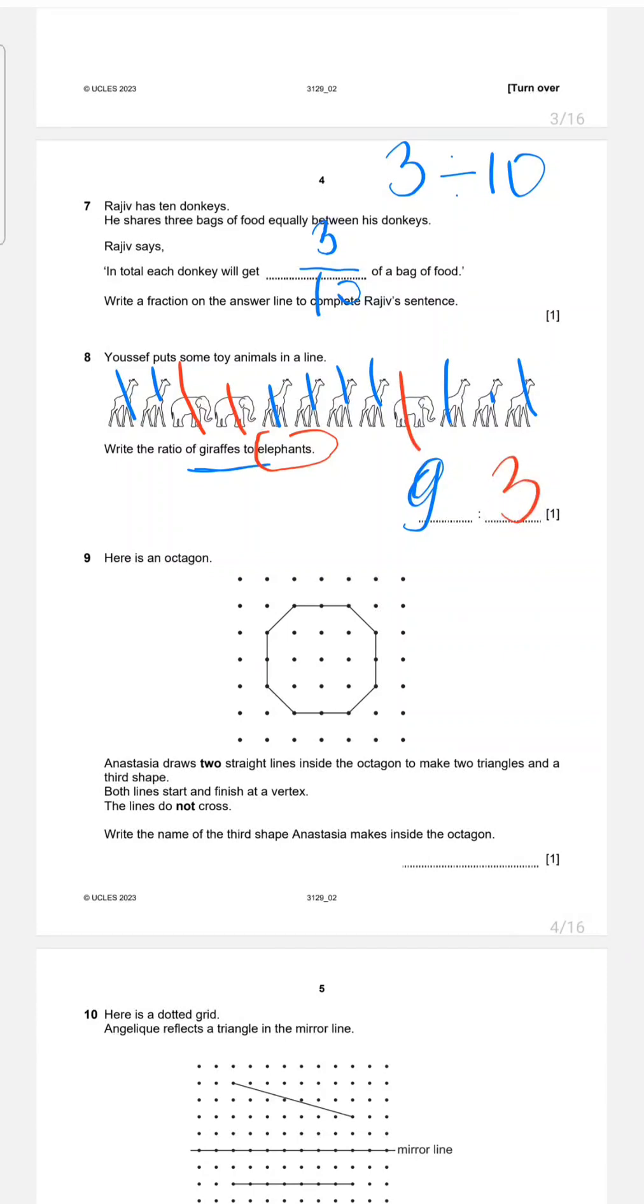Question nine. Here is an octagon. What is an octagon? Octagon has how many sides? Eight sides. If the shape has eight sides, that is an octagon. Anastasia draws two straight lines inside the octagon to make two triangles and a third shape. Both lines start and finish at a vertex. What is vertex? That is intersection point of two lines. This is the vertex, the point or corner of the shape. The line don't cross. You need to draw a line. But that line shouldn't cross. It writes the name of the third shape Anastasia makes inside the octagon.